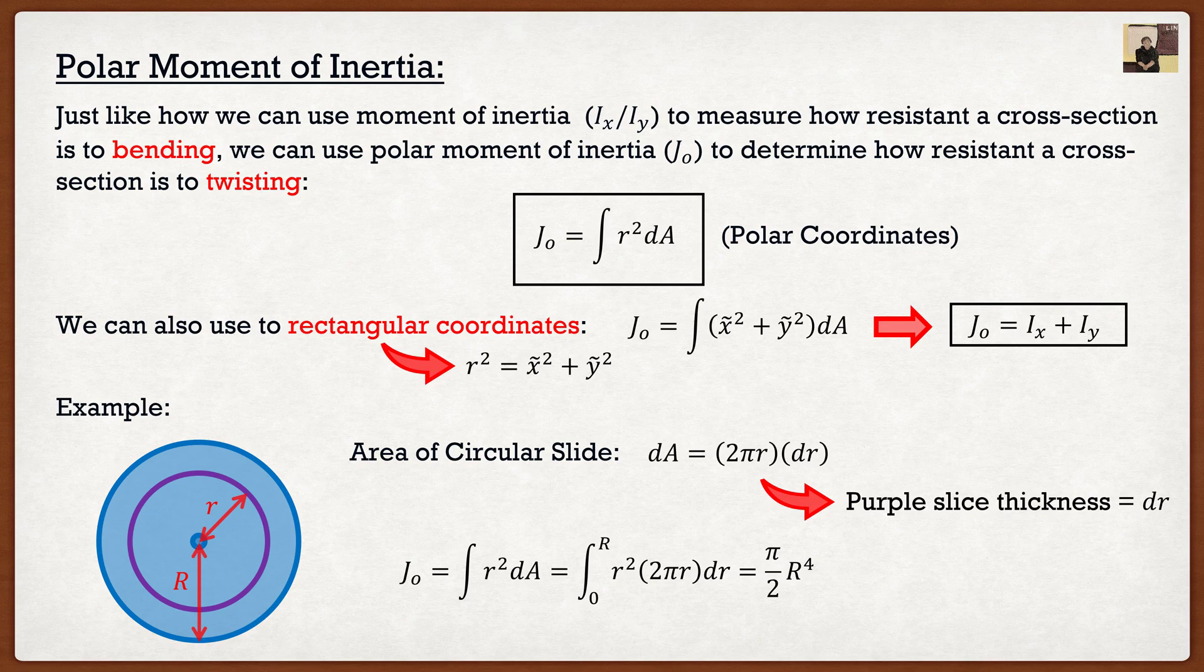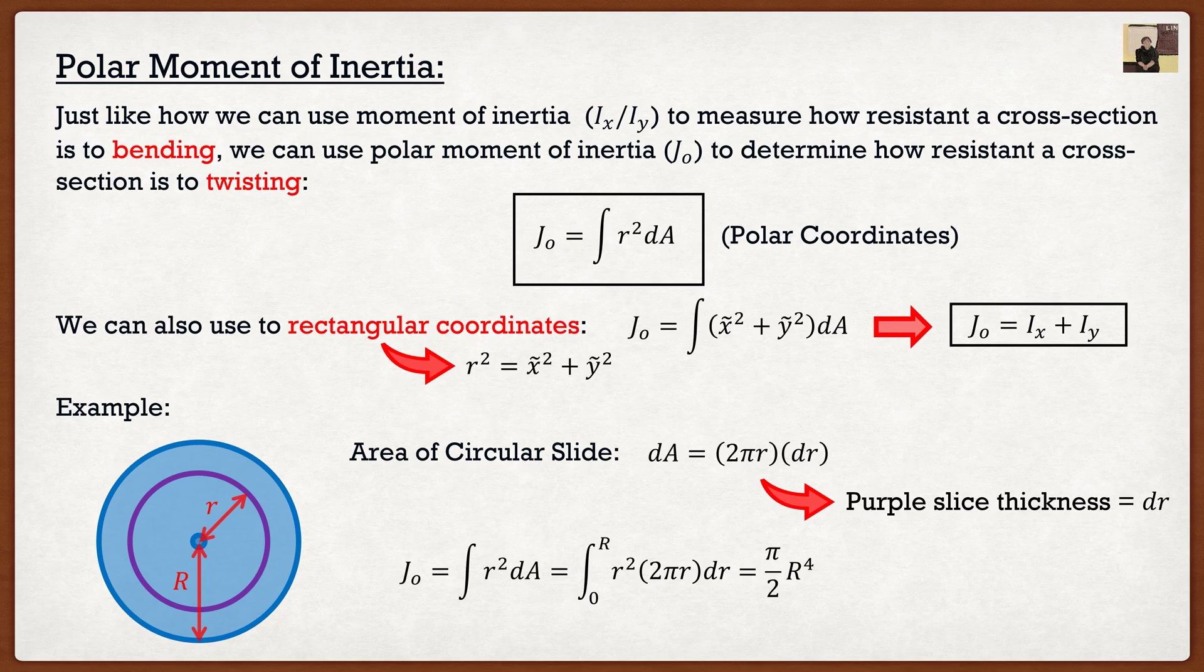The only time I've actually ever used this in design was the torsion of steel structures. But that is so rare that you basically never ever see it. Moments of inertia though, the original one, you see that all the time, radius of gyration. Again, you see all the time. This one, not so much.